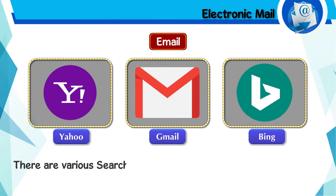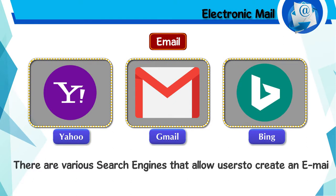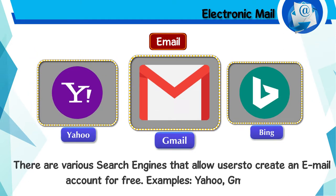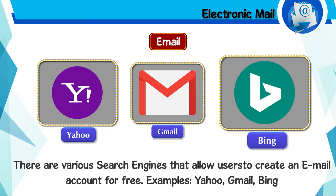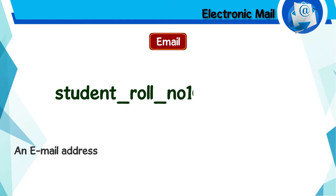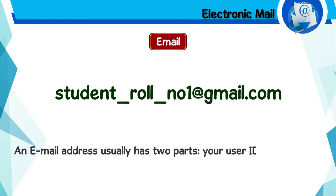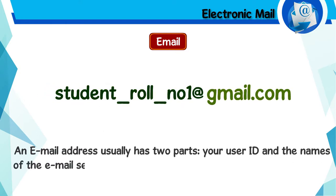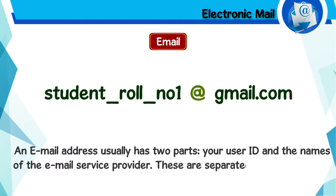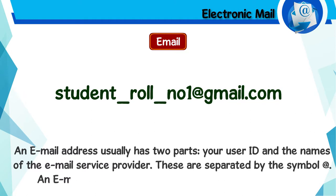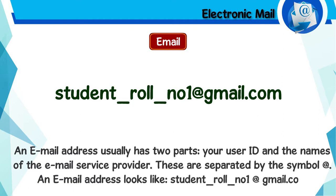There are various search engines that allow users to create an e-mail account for free. Examples: Yahoo, Gmail, Bing. An e-mail address usually has two parts: your user ID and the name of the e-mail service provider. These are separated by the symbol '@'. An e-mail address looks like: student_role_no1@gmail.com.